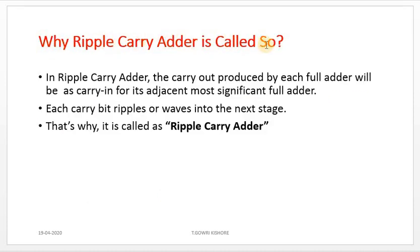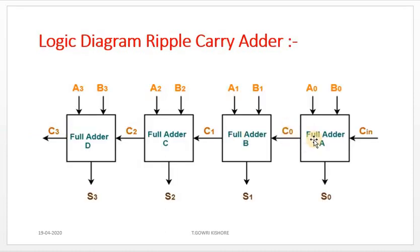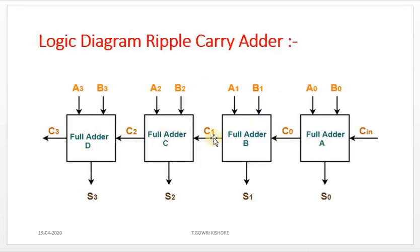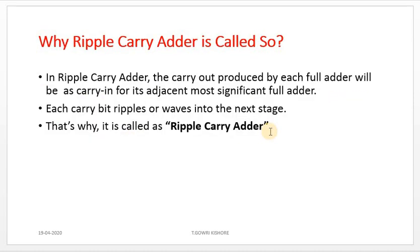Why is it called a ripple-carry-adder? In a ripple-carry-adder, the carry-out produced by each full-adder is used as the carry-in for its adjacent more significant full-adder. The carry-out of full-adder A becomes the carry-in of full-adder B, and C-out, C-1, C-2 all ripple to the next full-adder. That is why it is called a ripple-carry-adder.